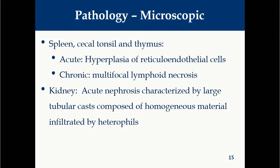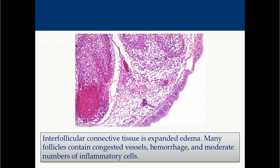In spleen, cecal tonsils, and thymus in acute stage you will find hyperplasia of reticular endothelial cells; in chronic stage you may find multifocal lymphoid necrosis. In the kidney, you may find acute nephrosis due to occlusion of the ureter, characterized by large tubular casts composed of homogeneous material surrounded by ample heterophilic infiltration. This microscopic picture of the bursa shows inter-follicular connective tissue expanded by edema, with many follicles containing congested blood vessels, hemorrhage, and moderate numbers of inflammatory cells.